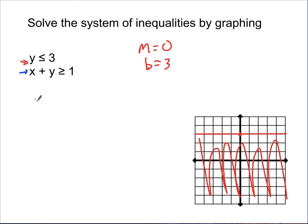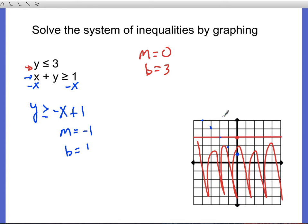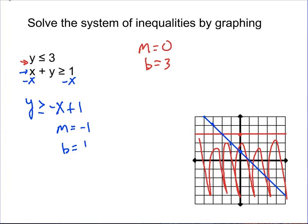The next inequality we'll graph in blue. Before graphing, I need to get it into slope-intercept form by subtracting x from both sides, giving y is greater than or equal to negative x plus 1. The slope is negative 1 and the y-intercept is positive 1. Since it has the equal sign it gets a solid line, and since it's y is greater than, we shade above the blue line. The part I'm most concerned about is where the shading from both inequalities overlaps.